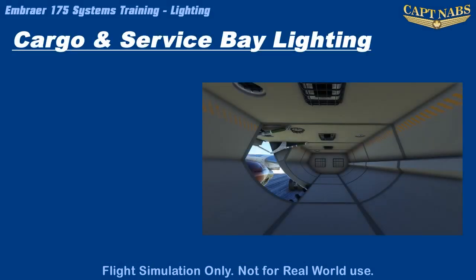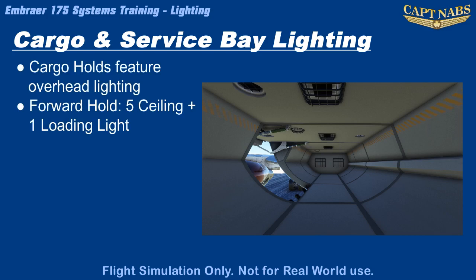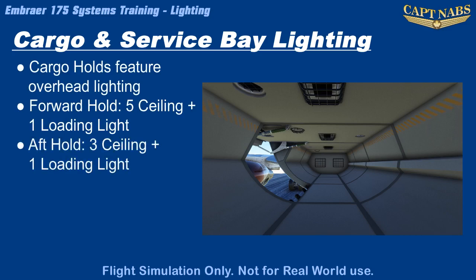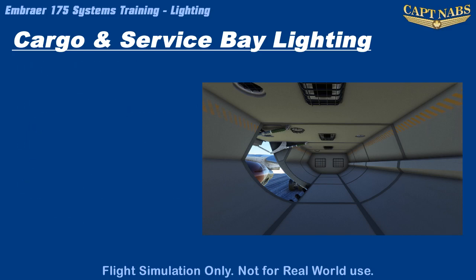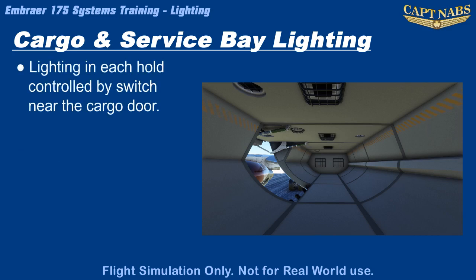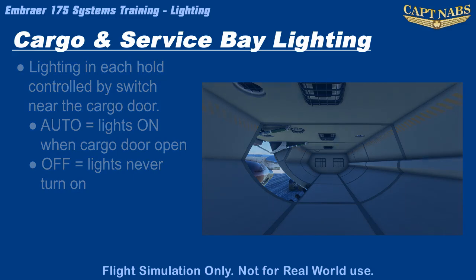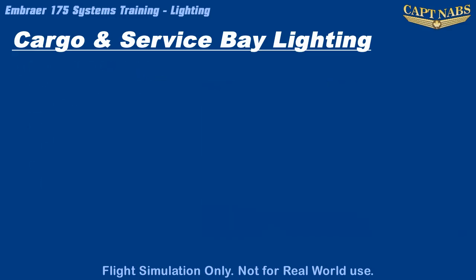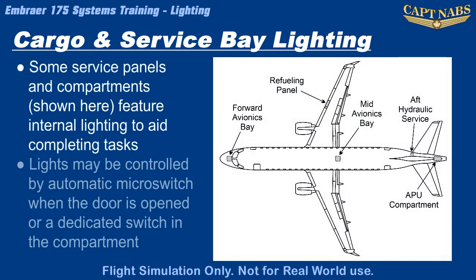The cargo compartments on the Embraer feature overhead lighting. The forward cargo compartment has 5 cargo lights and 1 loading light just inside the door. The aft cargo compartment has 3 cargo lights with a loading light just inside the door. All lights are covered by protective grills to prevent damage during loading, unloading, and cargo shifting during flight. The lights in each compartment are controlled by a switch at the door with an auto and off position. In auto, the lights are turned on whenever the corresponding cargo door is open; in off mode, the lights will not illuminate regardless of door position. Various service compartments also feature lighting, controlled either by a dedicated switch or a micro switch activated by the compartment door.